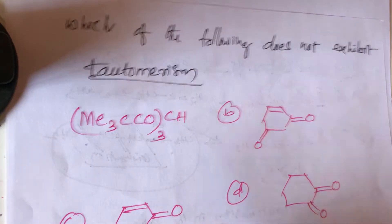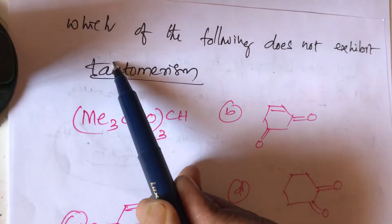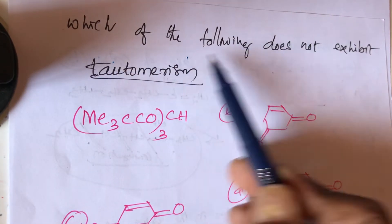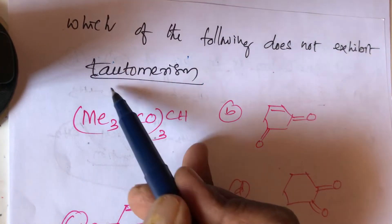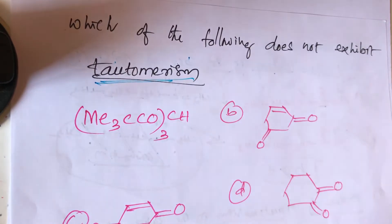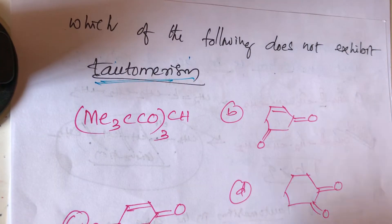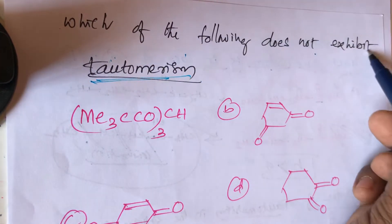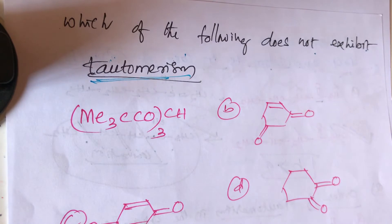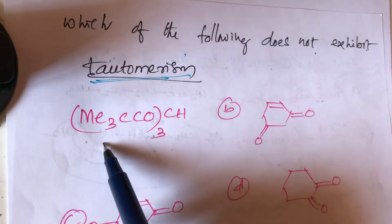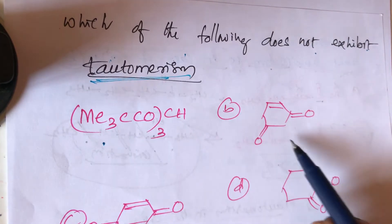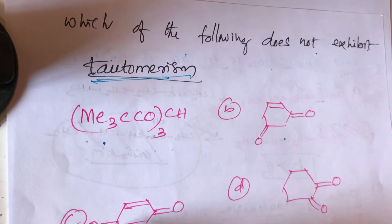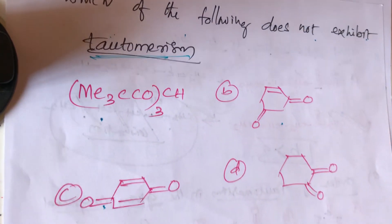Hello students. The question is: which of the following does not exhibit tautomerism? There are four compounds — first compound, second compound, third compound, and fourth compound.